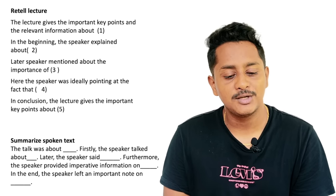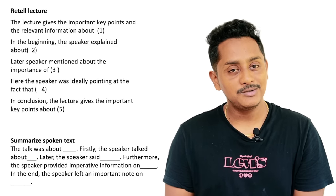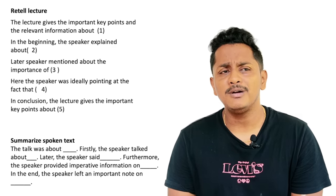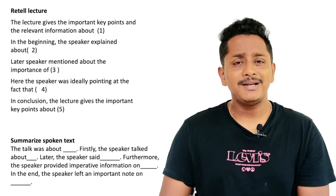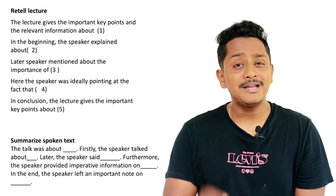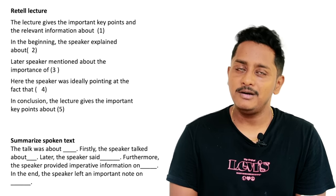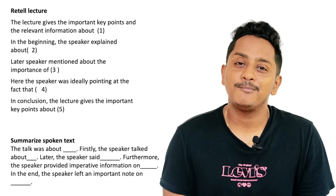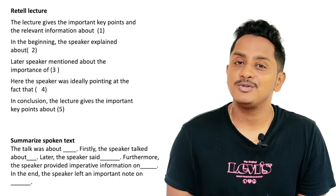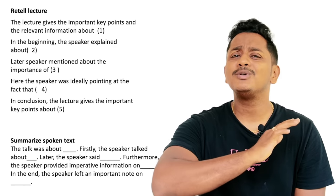Let's look at the templates. Any template can be used for Retell Lecture, but use one that gives you a good flow of speech. For example: 'The lecture gives the important key points and relevant information about… In the beginning the speaker explained about… Later the speaker mentioned about the importance of… Here the speaker was ideally pointing at the fact that… In conclusion the lecture gives the important key points about.' For Summarize Spoken Text, use shorter sentences, as content matters the most there.